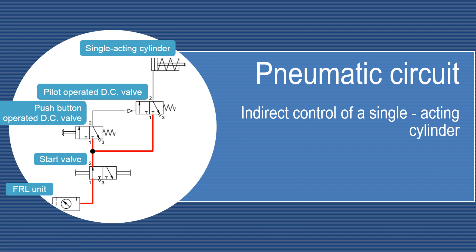In this video we will try to understand indirect control of a single acting pneumatic cylinder. The various components used in this circuit are the FRL unit (filter, regulator, and lubricator), the start valve which is a lever or hand operated direction control valve, a push button operated direction control valve, and a pilot operated direction control valve which in turn operates the single acting cylinder.